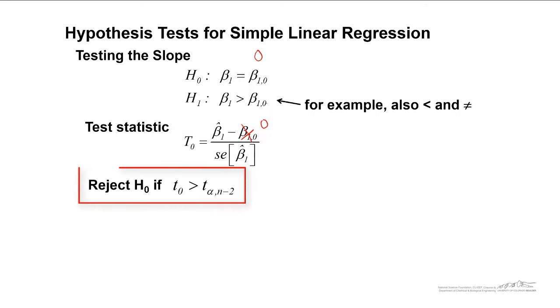We reject the null hypothesis if our test statistic for this upper tailed test is greater than t_alpha with n minus 2 degrees of freedom. So this is very similar to some of the hypothesis tests that we've done previously. Note the n minus 2 because now our degrees of freedom are a little bit smaller because we've used up two degrees of freedom in calculating our estimates for beta_0 and beta_1.